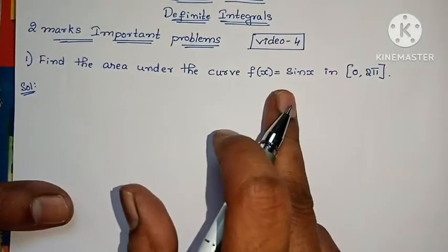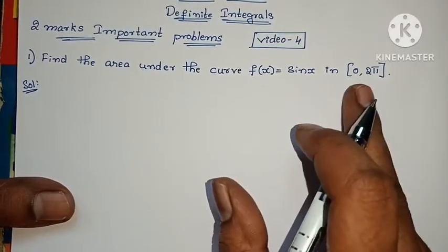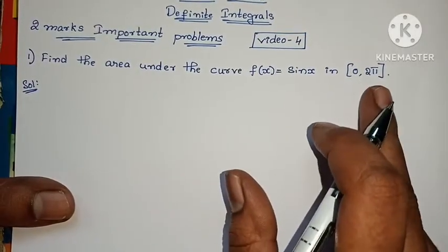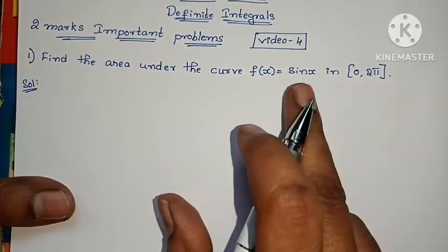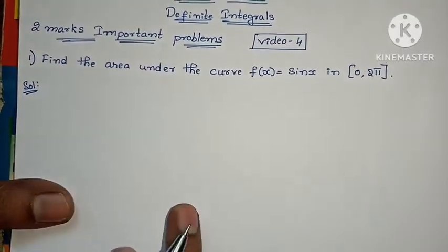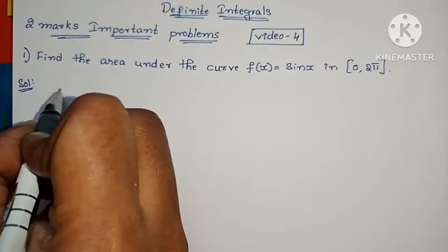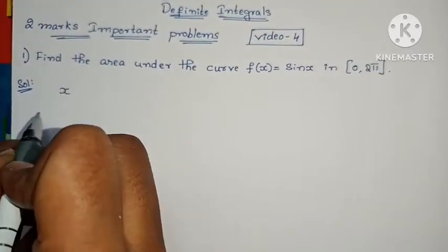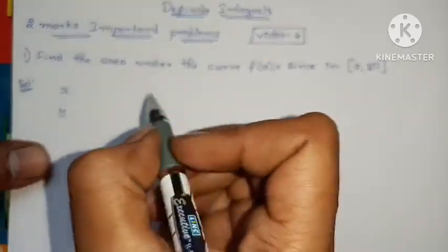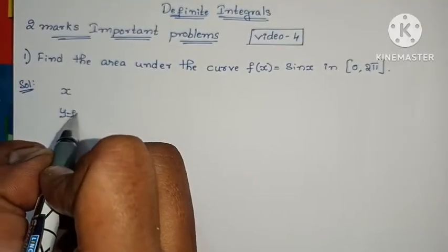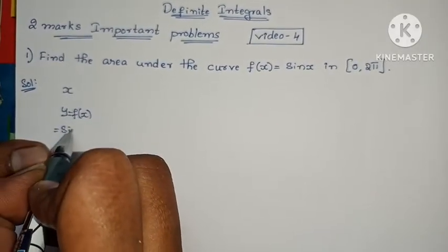Find the area under the curve f(x) = sin x in the interval 0 to 2π. sin x is equal to sin x. x is equal to y equals to f(x). f(x) is equal to sin x.